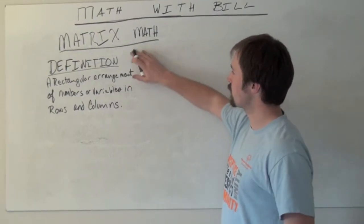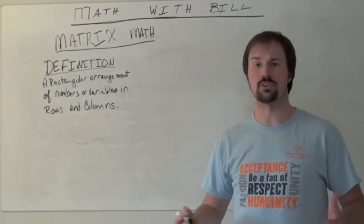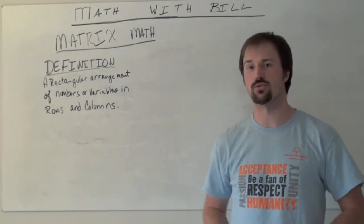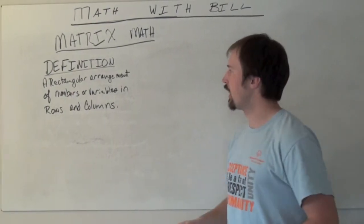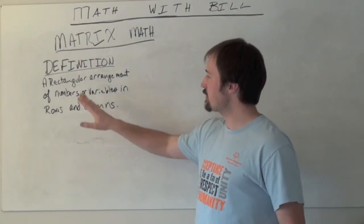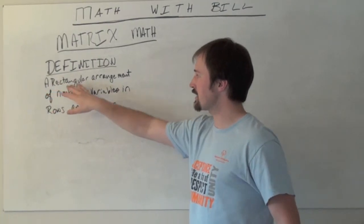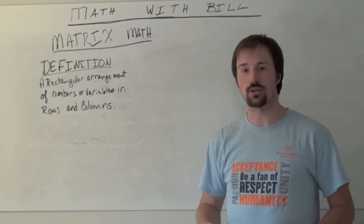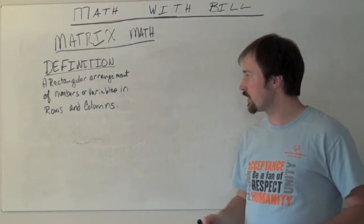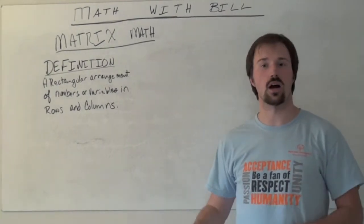As far as the definition that we're going to be looking for with this matrix math that our next few videos are going to be about, really a matrix is defined as a rectangular arrangement of numbers or variables in rows and columns.